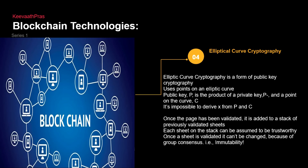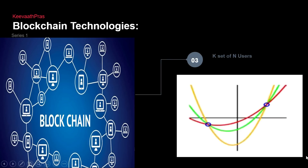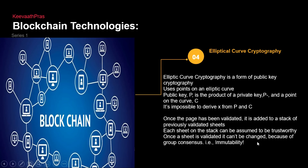Elliptic curve cryptography is also a public key cryptography — it uses the points on the elliptic curve. The public key is P, the product key is P-dash, and the point is C. It is basically impossible to derive x from P and C. Once the page has been validated, it is added to the stack of previously validated blocks. Each block on the stack can be assumed to be trustworthy because of group consensus, which is part and parcel of blockchain, making it immutable and tamper-proof.